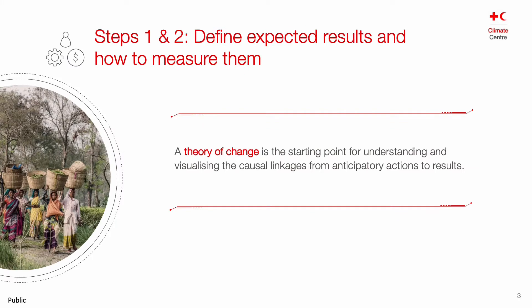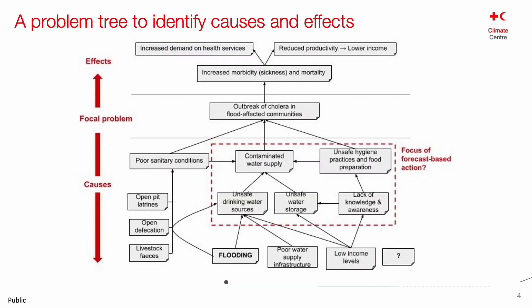Any attempt at monitoring and evaluating the effects of anticipatory action starts with the definition of expected results and how to measure them. A theory of change is a useful starting point for understanding and visualizing the causal linkages from actions to results. In this hypothetical example, we are trying to prevent the outbreak of cholera in flood-affected communities, which is caused by flooding contaminating water sources and people consuming contaminated water, leading to a cholera outbreak.